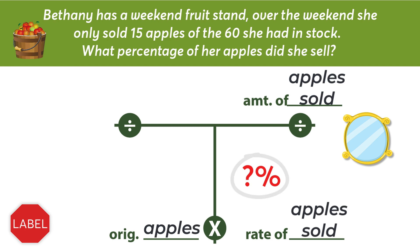The first number we come to in the problem is 15, and we have to decide if that number belongs in the T-Bar. Remember, not every number that you are given in a math problem automatically goes into the T-Bar. You will have to double check, triple check, and quadruple check that the number you are dealing with matches the label. According to the problem, 15 is the number of apples that Bethany sold, so I can safely put that into the top spot. The next number is 60, and that is the number of apples Bethany started with, so I can fill that into the left.